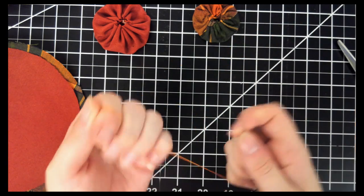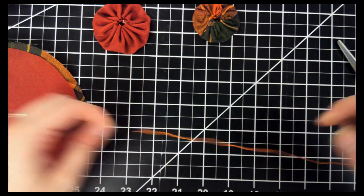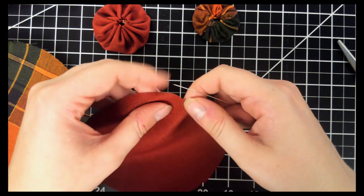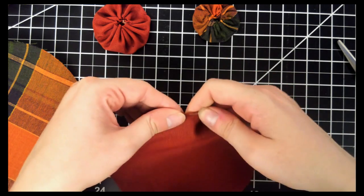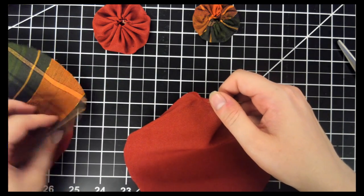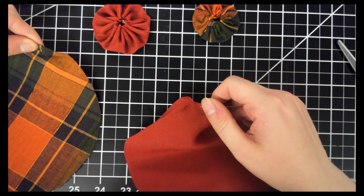Now on to our next size. It's a 6 inch circle. And we're just going to do the exact same thing. And if you have one of the fabrics that isn't double sided, you'll want to make sure that you're folding in towards the wrong side of the fabric. That way your pretty image is on the outside.